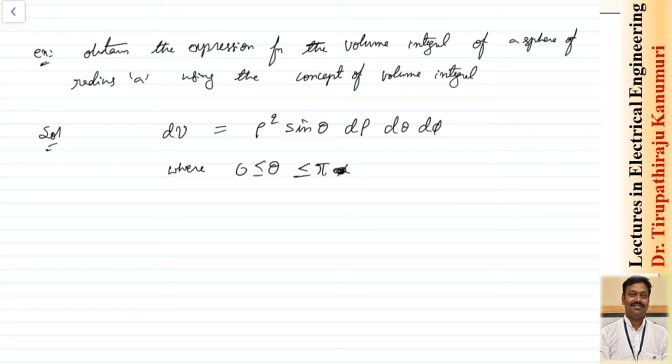Then ρ or r (some books write ρ, some write r) will vary from 0 to a because the given radius equals a, and the value of φ is varying from 0 to 2π.